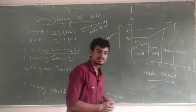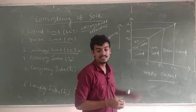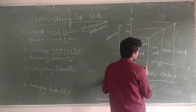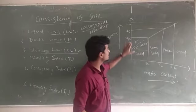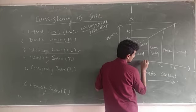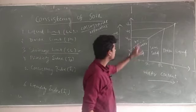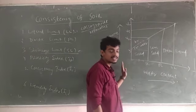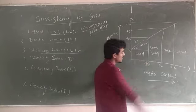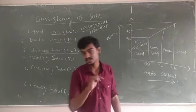Shrinkage limit is the minimum water content at which the volume of soil becomes constant. If you reduce water content beyond the shrinkage limit, there will be no volume change — volume remains constant. Beyond the shrinkage limit, if you change the water content, volume will definitely change. The second definition: shrinkage limit is the maximum water content at which the soil is completely saturated, meaning degree of saturation S equals 100 percent.